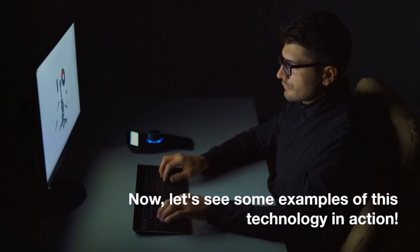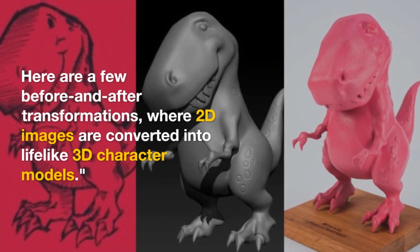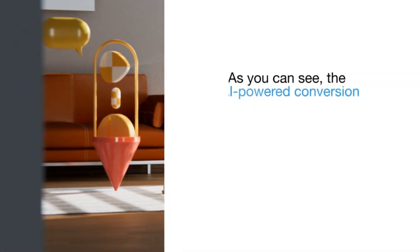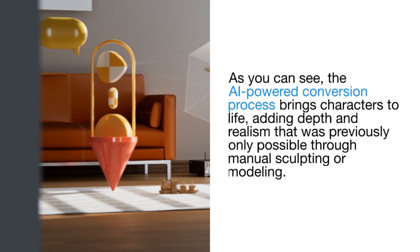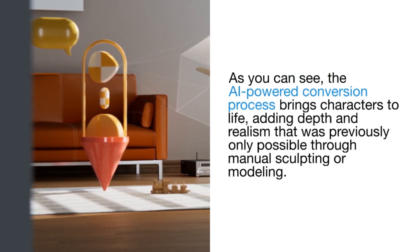Now, let's see some examples of this technology in action. Here are a few before and after transformations, where 2D images are converted into lifelike 3D character models. As you can see, the AI-powered conversion process brings characters to life, adding depth and realism that was previously only possible through manual sculpting or modeling.